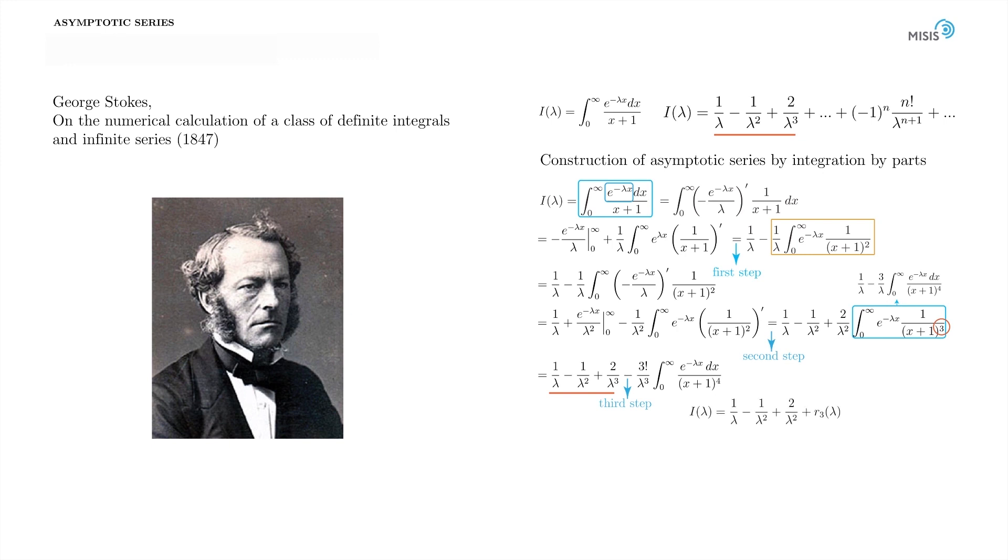Obviously we may go on and make n steps to recover the first n terms of the series in the form of the exact equation. Here is our partial sum of the asymptotic series, and let's write down the integral defining the error term.